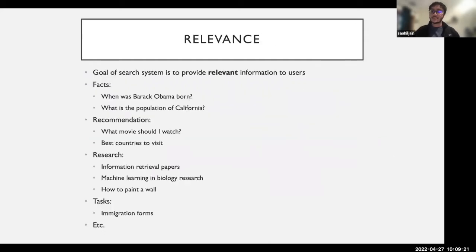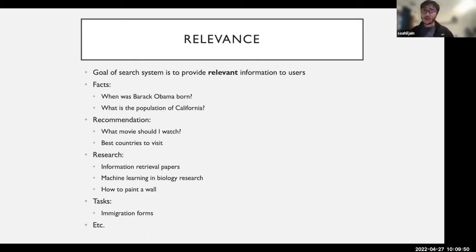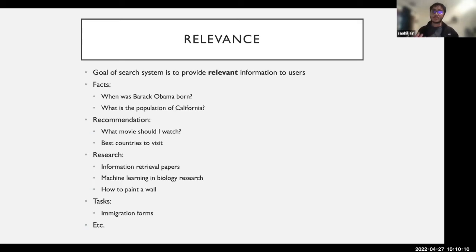Now let's talk about relevance. When we think about search, the goal of the search system is to provide relevant information to users. Relevance is a somewhat subjective term, and how you define it matters a lot and probably differs from domain to domain. For factual queries like 'when was Barack Obama born' or 'what is the population of California,' the relevant information is fairly obvious. But there are deeper levels — if someone asks about the population of San Francisco, are they asking about the greater metropolitan area or the city itself? A lot of it is actually understanding intent.